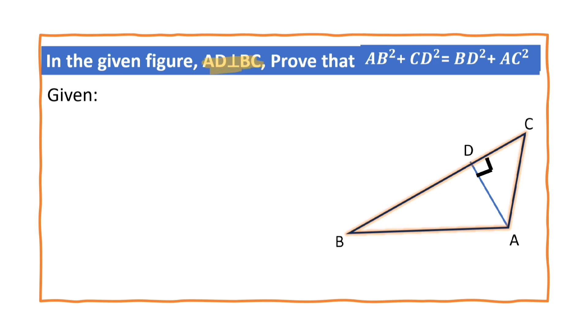So, angle ADB is equal to angle ADC, that is equal to 90 degrees. We have to prove that AB² + CD² = BD² + AC².